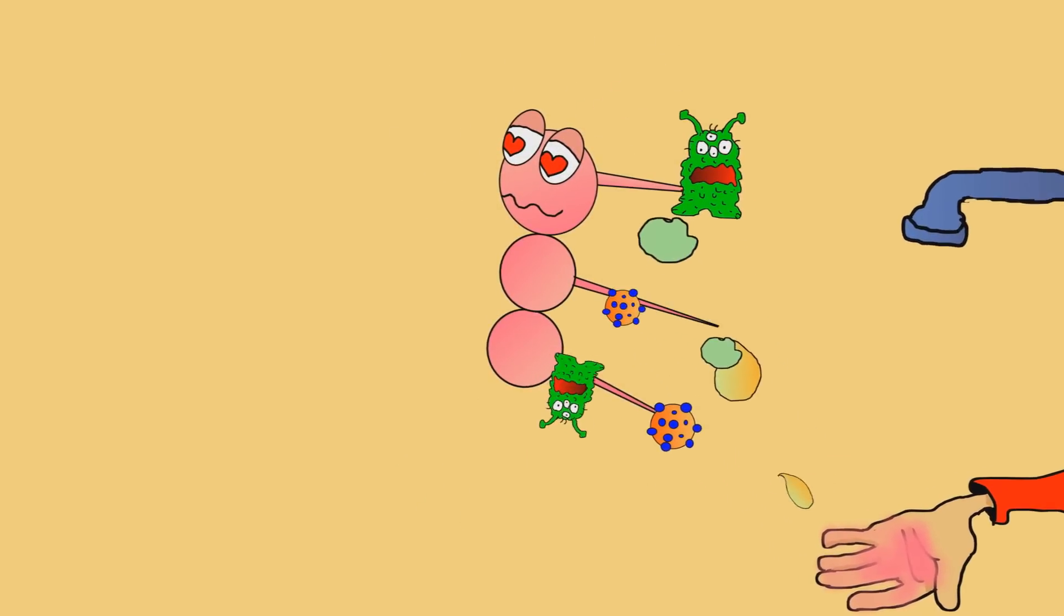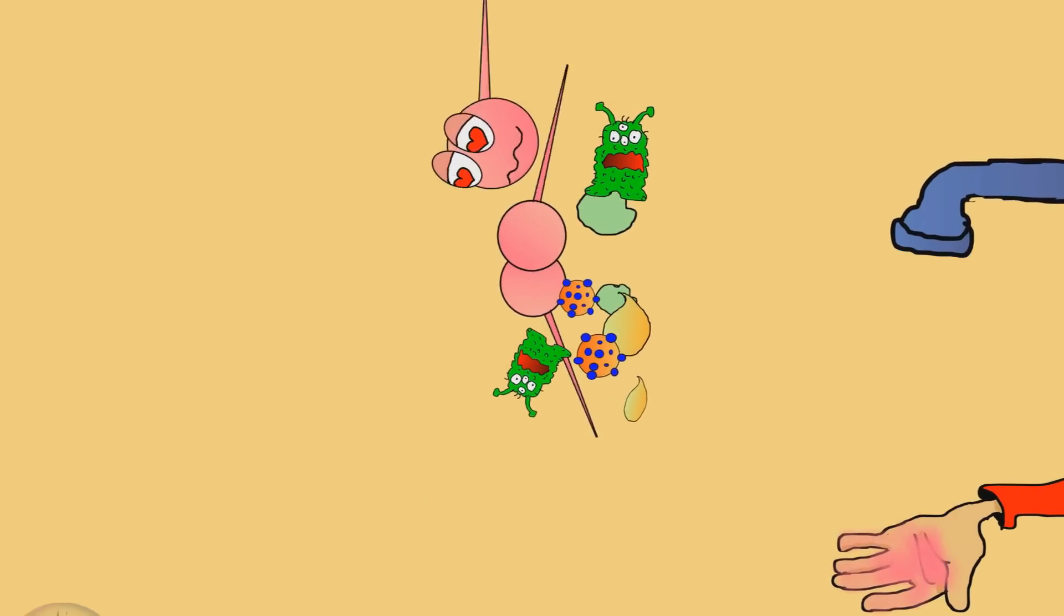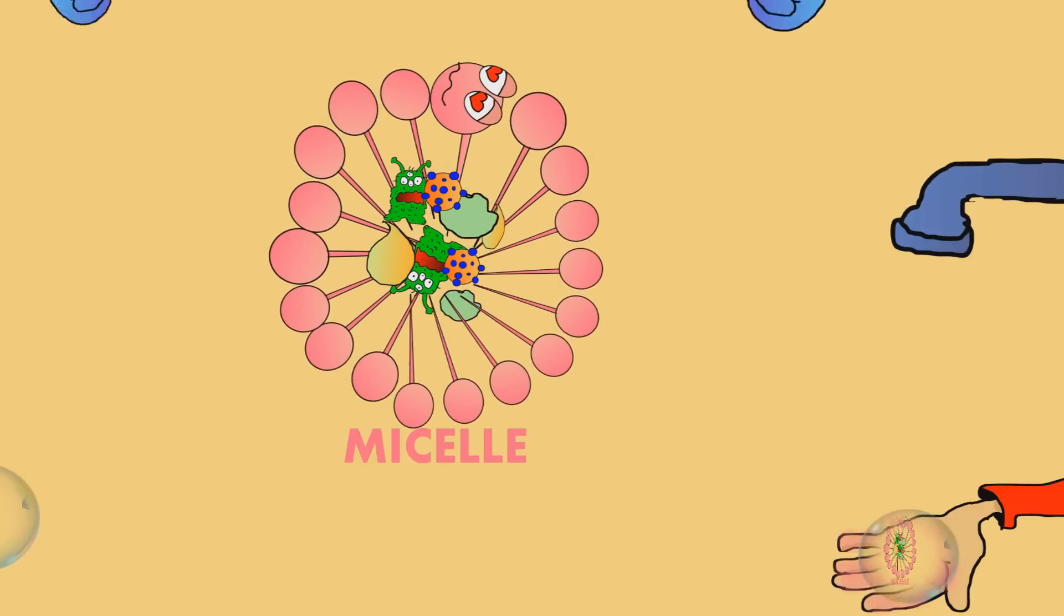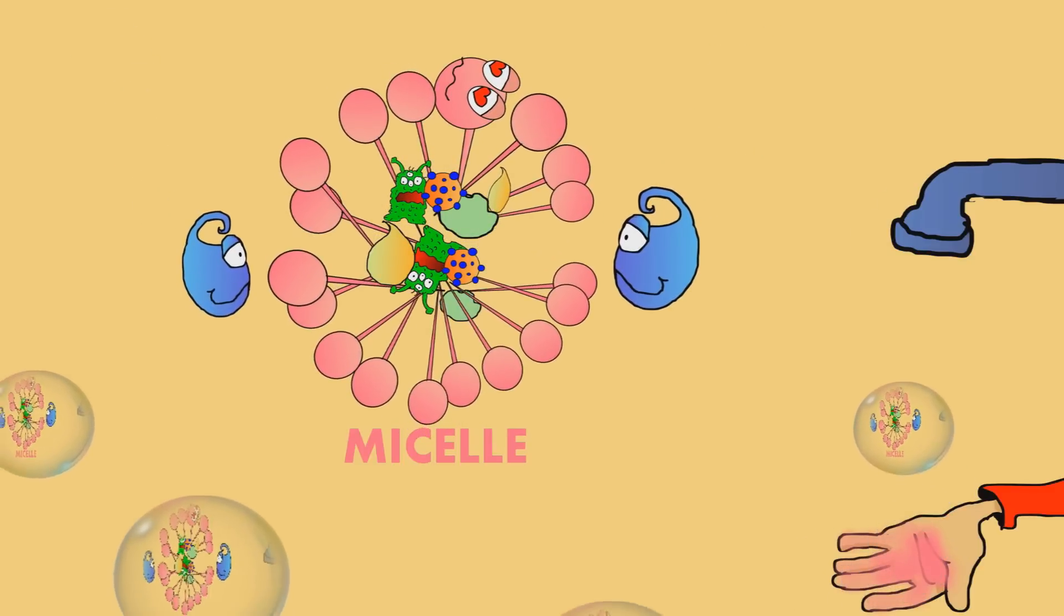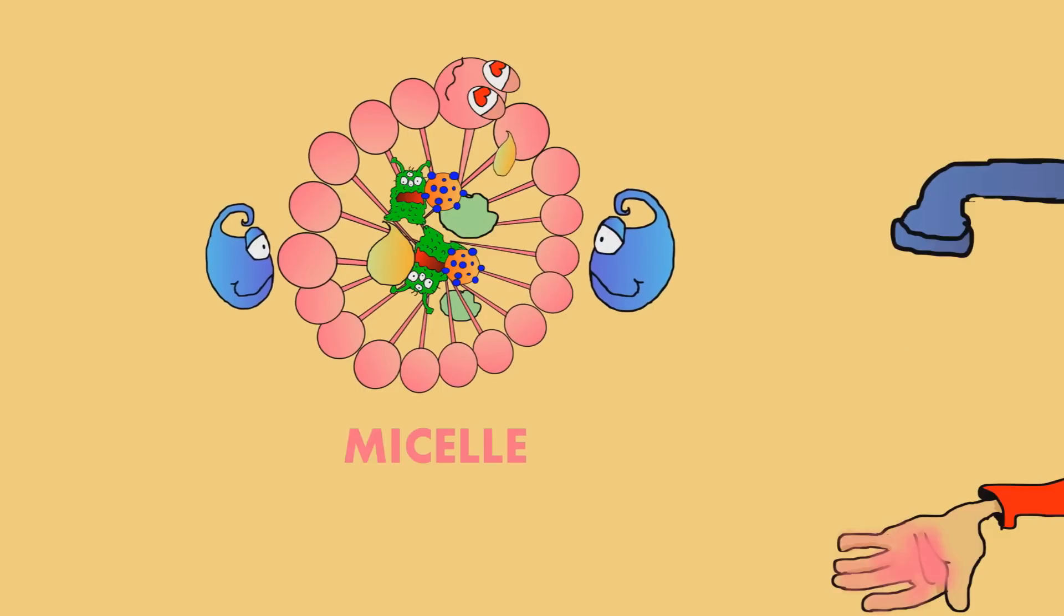Then, when you run water over your hands, the soap molecules form something called a micelle. The hydrophobic tails are trying to escape the water, which makes the soap molecules form a sphere around all of the gunk.